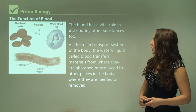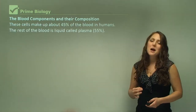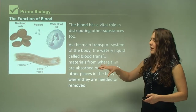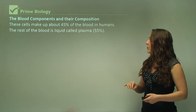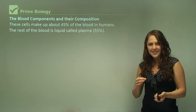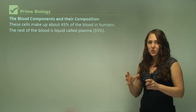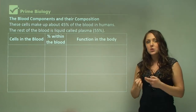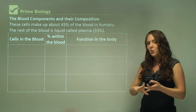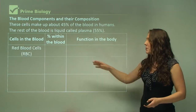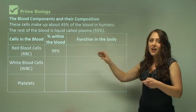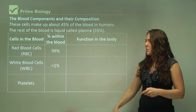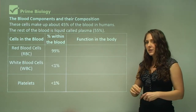Now the components of blood: blood cells make up about 45% of blood in humans — specifically red blood cells and other blood cells. The rest of the blood is a liquid called plasma, which makes up 55% of the total blood. Within that 45% — which includes red blood cells, white blood cells, and platelets — 99% are red blood cells. Less than 1% are white blood cells and less than 1% are platelets.